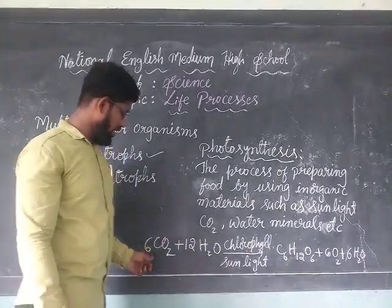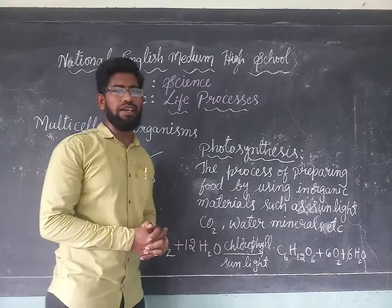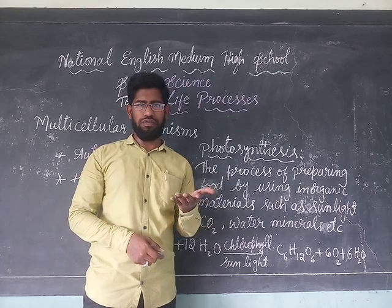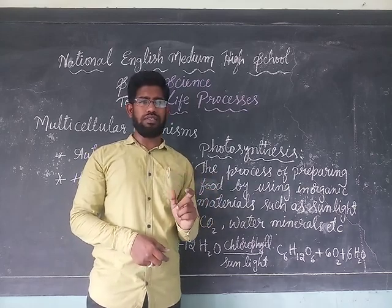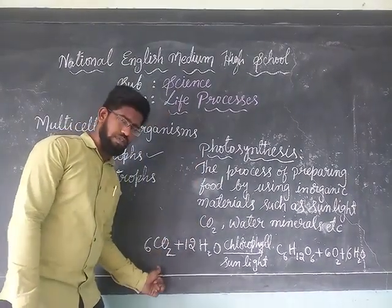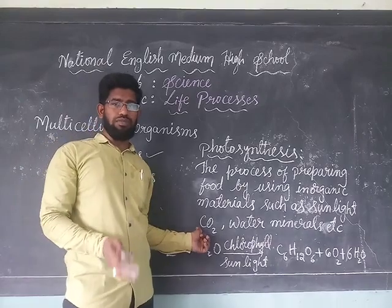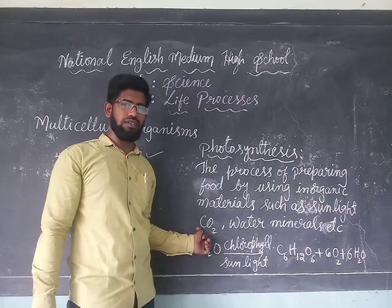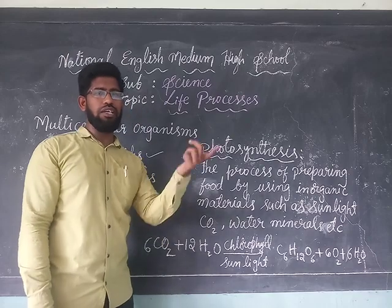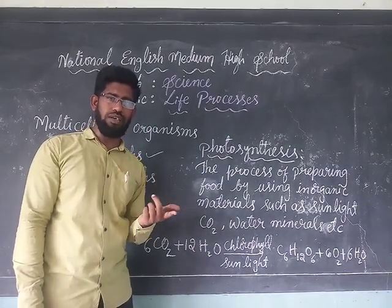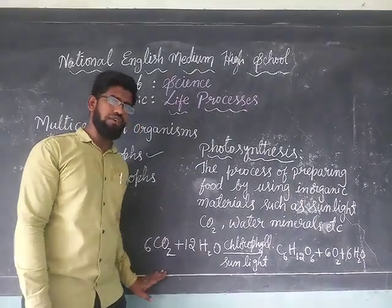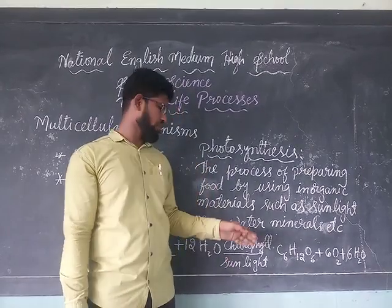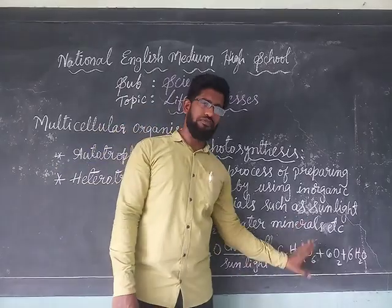Plants take in carbon dioxide through small pores on the lower surface of the leaf called stomata, which help in the exchange of gases. Water is absorbed from the soil through root hairs and supplied to the leaf through the xylem tissue, which is a water-conducting tissue. By using this carbon dioxide and water, the chlorophyll present in the leaf absorbs sunlight, and with all these combined, plants prepare their food in the form of starch.